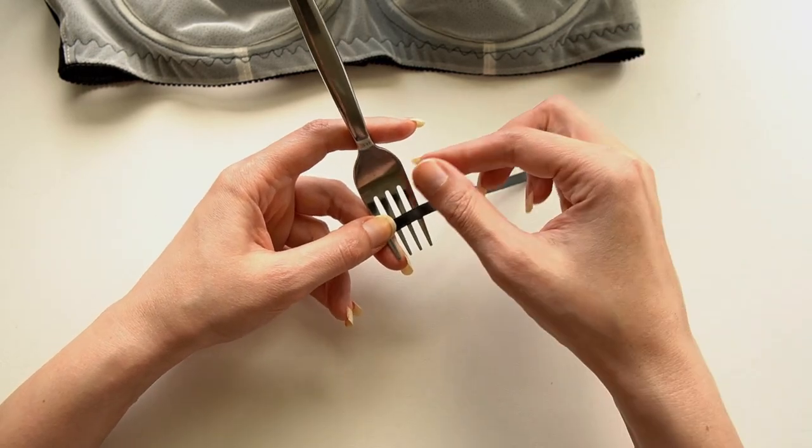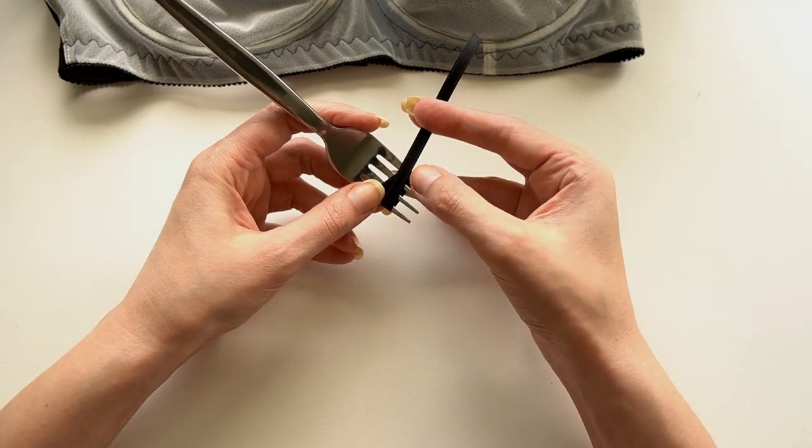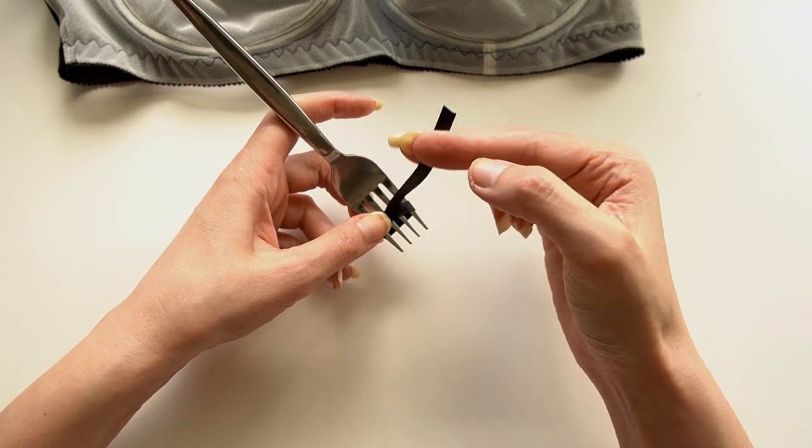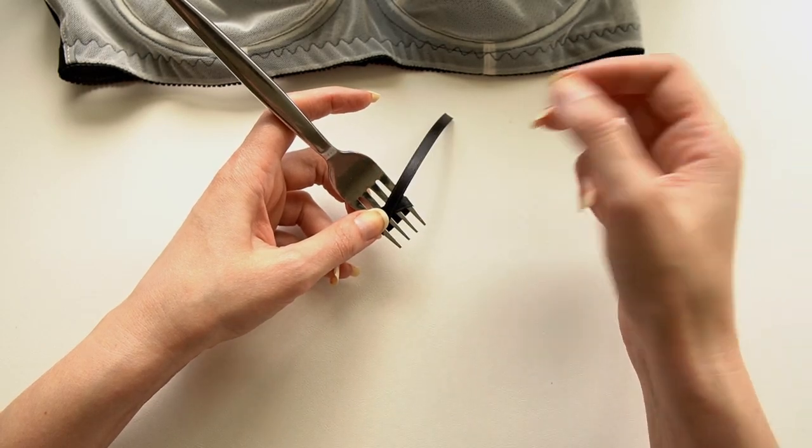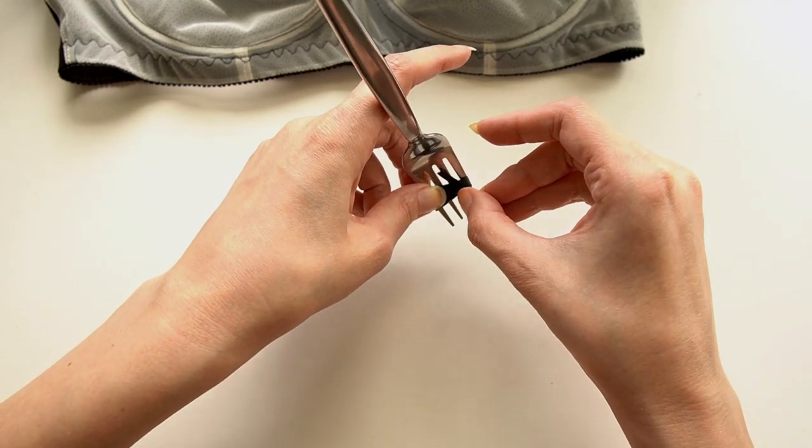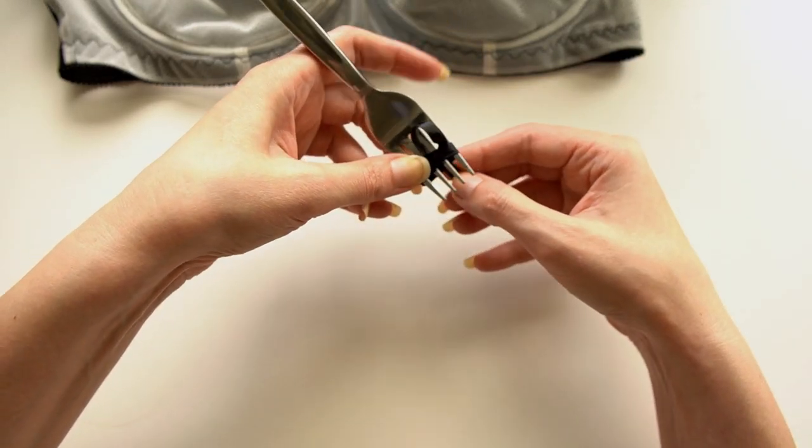So I add the ribbon on top of my fork, and then I'm going to wrap it underneath and back around. And then once it's back around again, I want to move my thumb so that I'm holding onto the ribbon as a whole. So then we're going to go through the middle tine above the ribbon here.